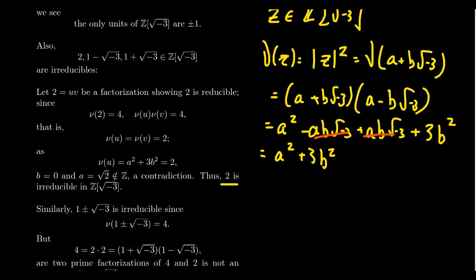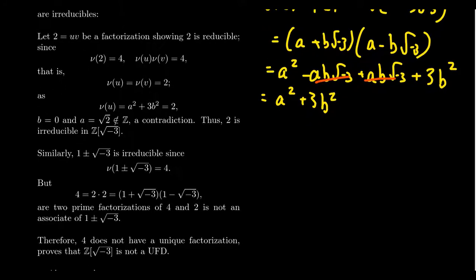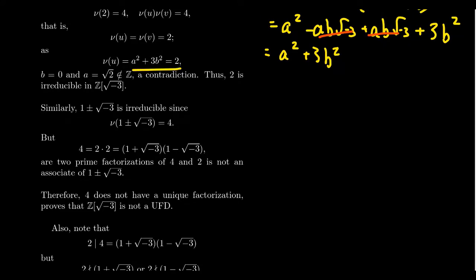This is an example of a Diophantine equation — an equation for which we only accept integer solutions. The lack of Diophantine solutions is evidence that 2 is irreducible. We can apply the same argument to 1 ± √(-3): their norm also equals 4, and by the same reasoning, they are also irreducible — there is no valid factorization into non-unit elements.